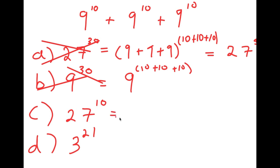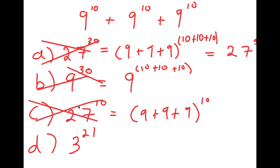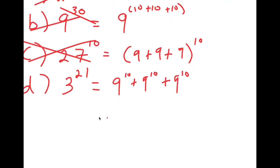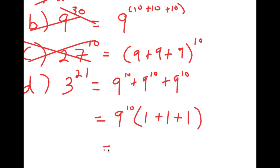Option C, 27 to the power of 10, was gotten by adding the bases but keeping the exponent the same — also wrong; that's not how you add exponents. By process of elimination, D) 3 to the power of 21 is the right answer. Starting with 9^10 + 9^10 + 9^10, I factor out 9^10 to get 9^10 times (1+1+1), which equals 9^10 times 3.